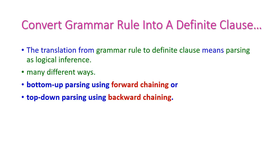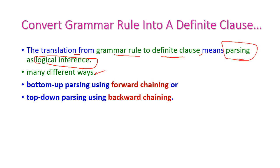To translate the grammar rule into a definite clause means parsing as logical inferences. There are different ways to do this. If we use bottom-up parsing, we can use the forward chaining inference rule. If we use top-down parsing, we can use the backward chaining inference rule.